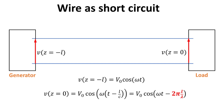Suppose that the voltage at the generator end is given by cosine omega t, and the speed of the electrical wave is c. Then the time it takes the signal to travel the distance L will be L divided by c. This means the voltage at the load end will experience a phase shift as highlighted in red. If the signal wavelength is much larger than the length of the wire, then we can ignore this phase.